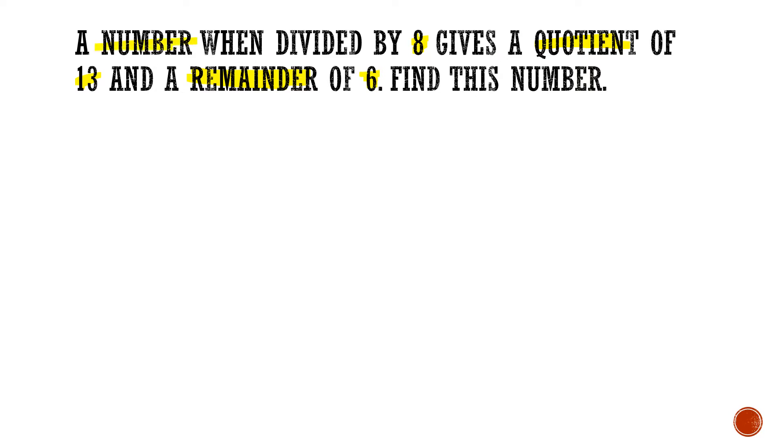Now the number over here and the number over here are referring to the same thing. You need to remember what these numbers are called. Now 13 is the quotient, 6 is the remainder, 8 is the divisor. The number here and the number here are referring to the dividend, the same number.